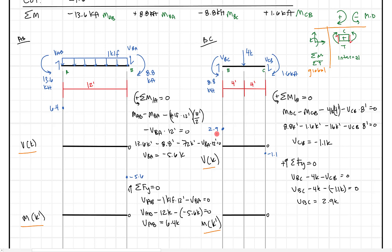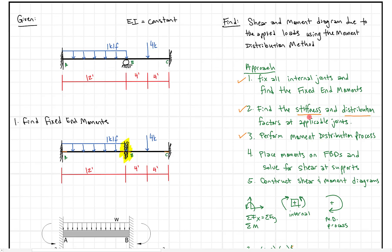That's step four. Scrolling up to our approach: find the fixed end moments, do the stiffness distribution, perform moment distribution, place the moments on the FBD and solve for shear at supports — we've done that. The last step will be to solve for the actual shear and moment diagrams. We'll stop here and pick up in the next video. If you have questions, drop a comment, or click on the next video and keep moving onward and upward.